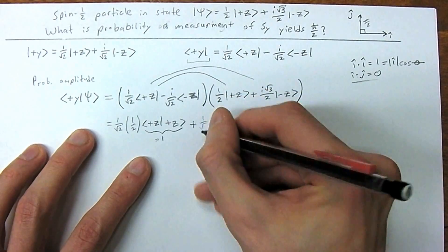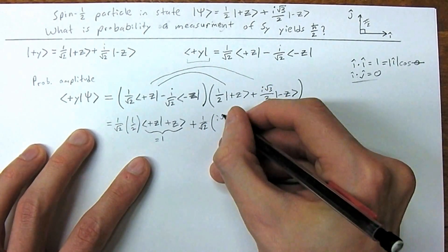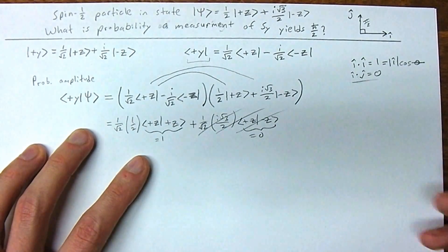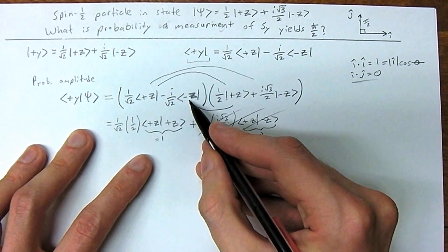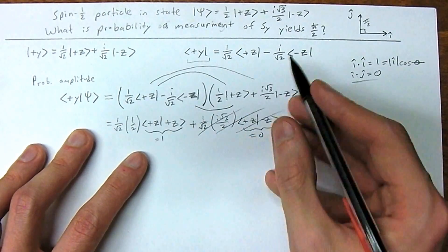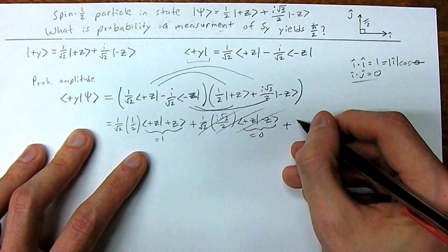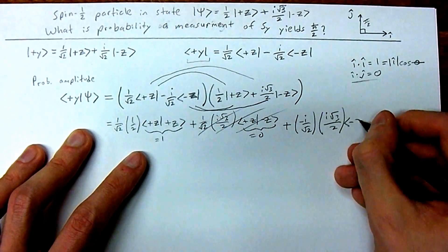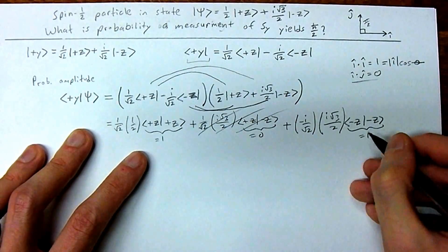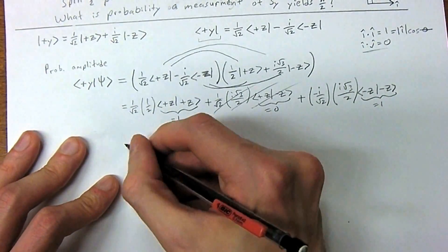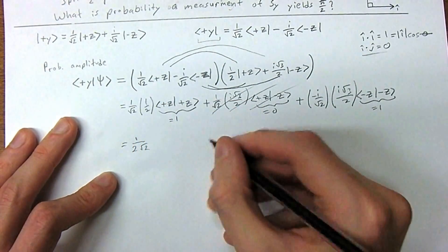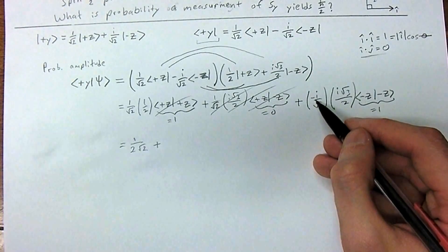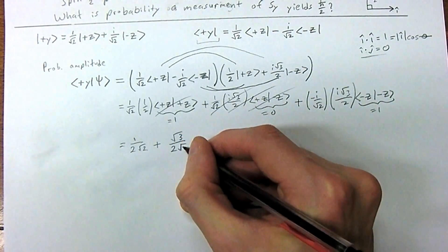Writing it out: the term (1/√2)(i√3/2)⟨+z|−z⟩ is just 0, so we lose that entire thing. Similarly, the term with ⟨−z|+z⟩ is also 0 for the same reason. But when we compute (−i/√2)(i√3/2)⟨−z|−z⟩, the inner product ⟨−z|−z⟩ = 1. So this simplifies to (1/√2)(√3/2), and since i² = −1, this term becomes positive.